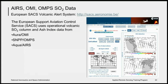The same and additional data is also available through the European Support for Aviation Control Service. It brings together many different sensors in a convenient web interface where you can find information on sulfur dioxide as well as ash and cloud information.